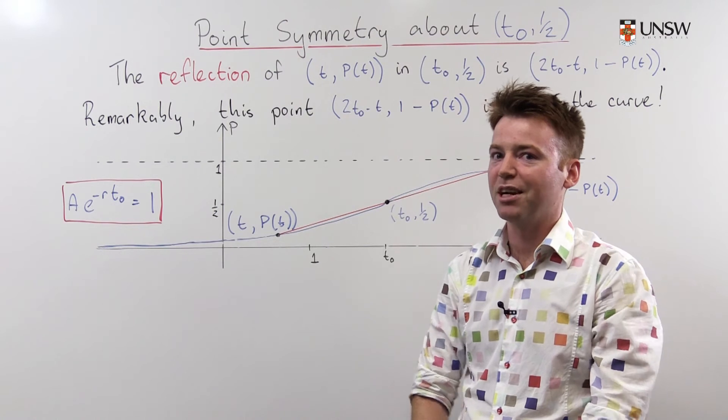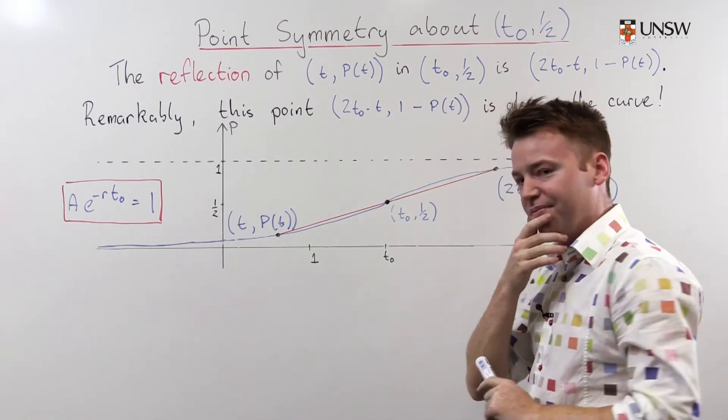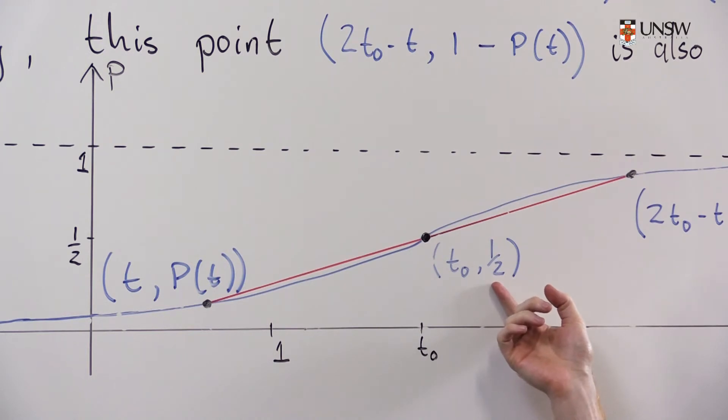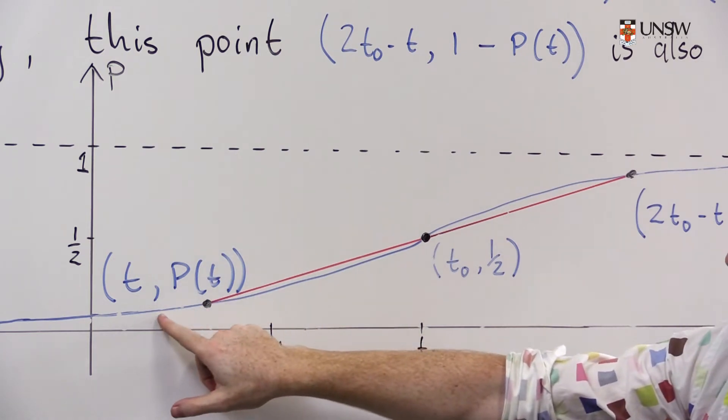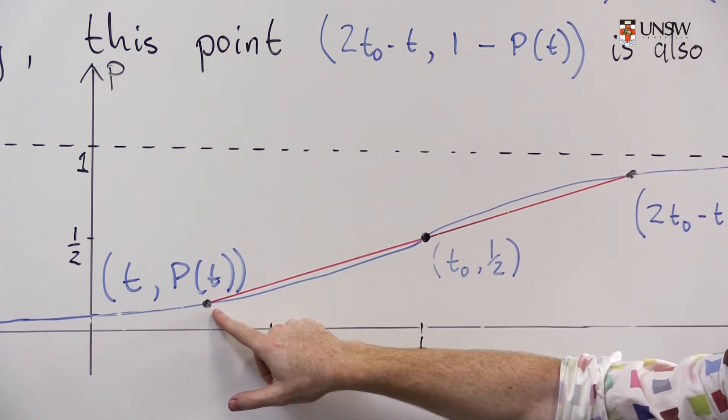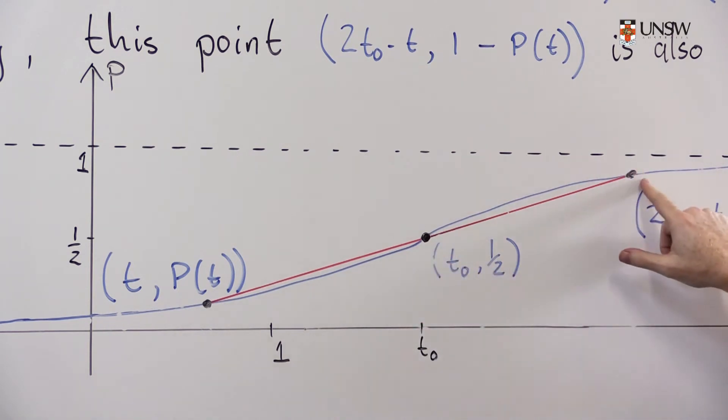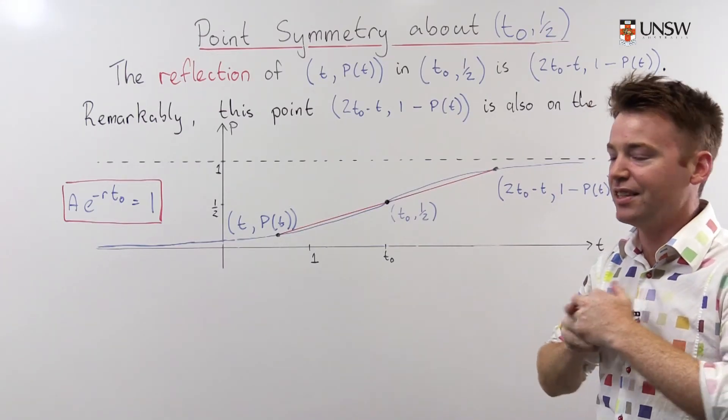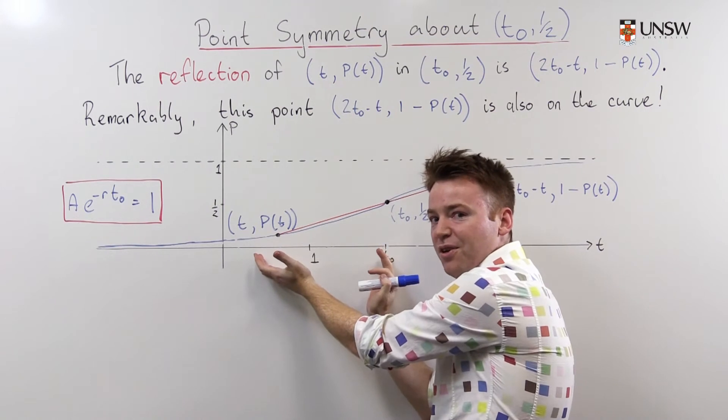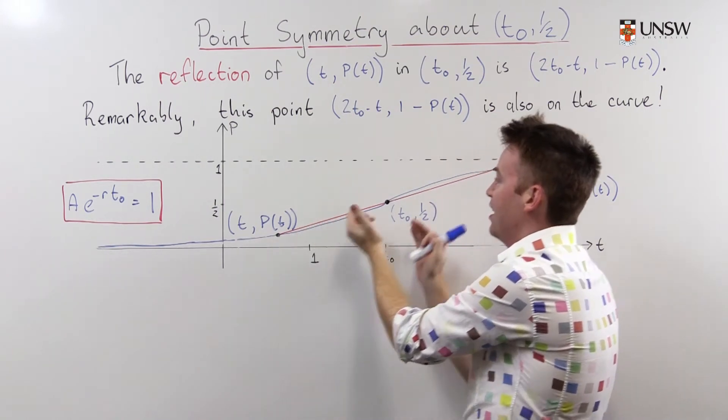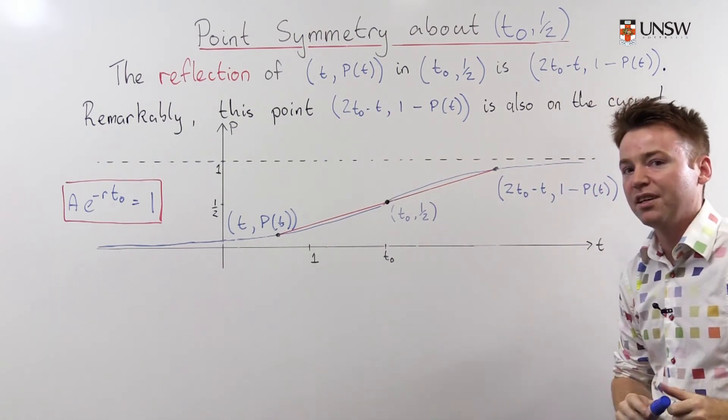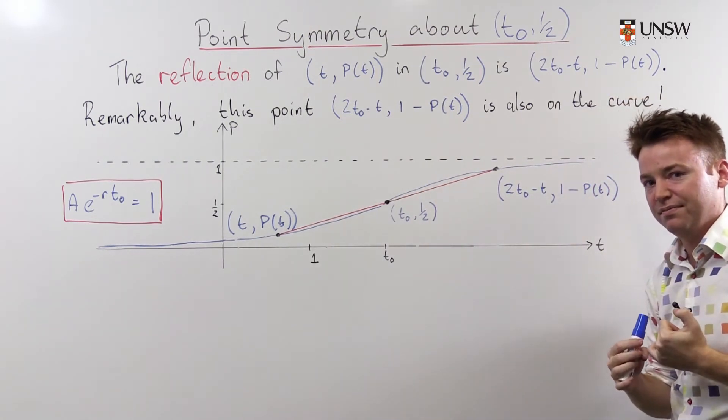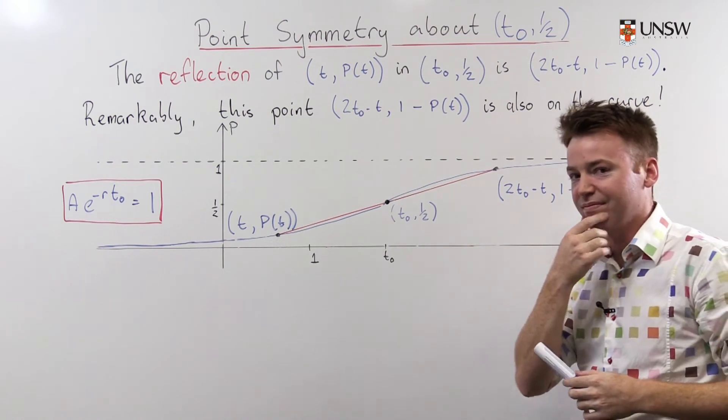Let's look at another remarkable property of the logistic curve. It's symmetric through the midpoint t0, 1 half. What that means is that every point on this curve over here can be reflected through this midpoint, and its reflection occurs back on the curve. This remarkable property allows us to say many interesting things. Having knowledge of the curve up until the point of inflection will enable us to say things about the curve in the future after the point of inflection.